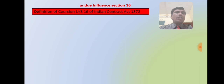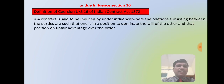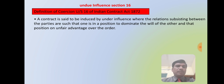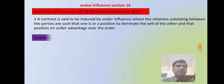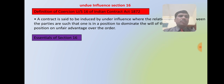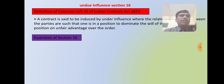Now we will discuss Section 16 — the definition of undue influence under the Indian Contract Act, 1872. A contract is said to be induced by undue influence where the relations subsisting between the parties are such that one is in a position to dominate the will of the other and uses that position to obtain an unfair advantage. Note: a correction — it is 'undue influence' under Section 16, not coercion. Undue influence is another factor which hampers a contract between the parties.